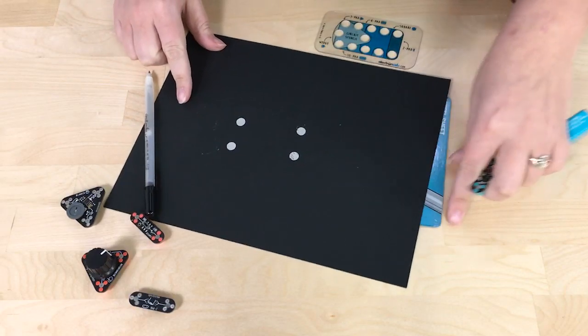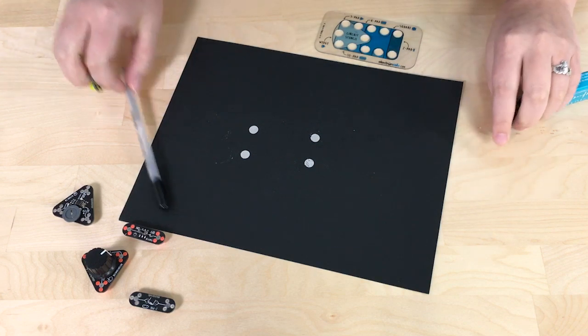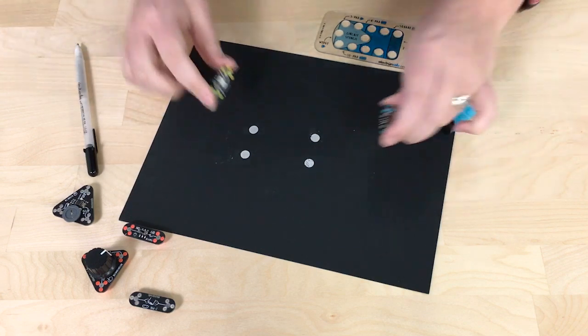Now like I said before these are magnetic. So we're going to slide the steel sheet under the piece of paper and snap them in place.